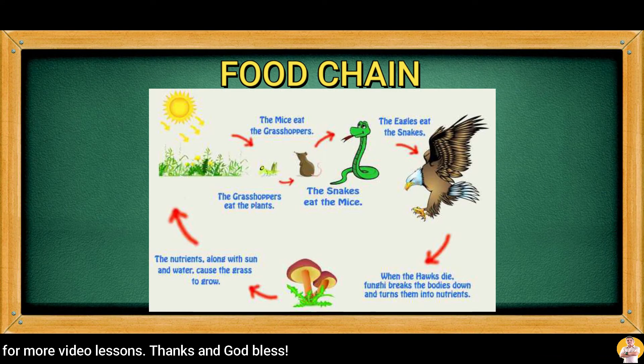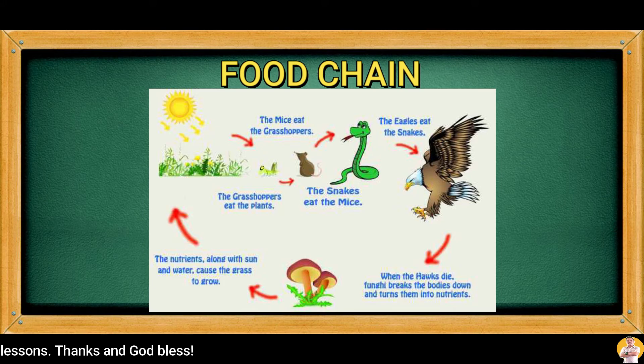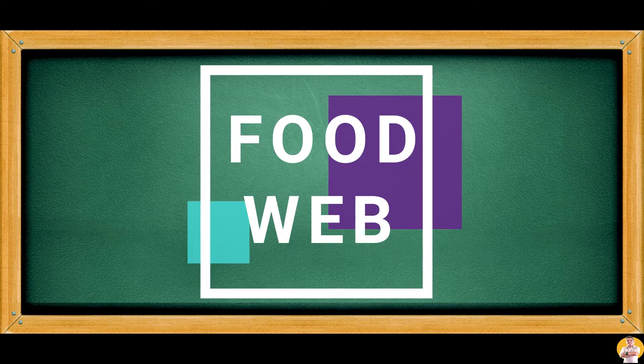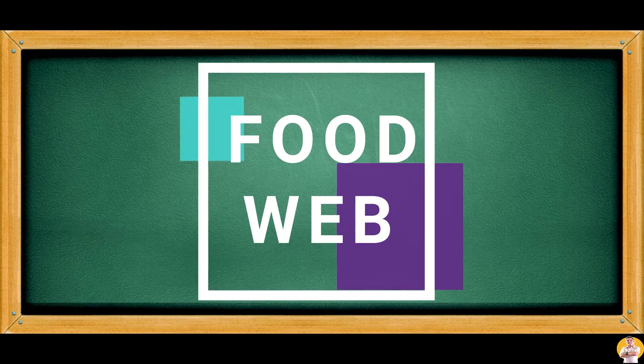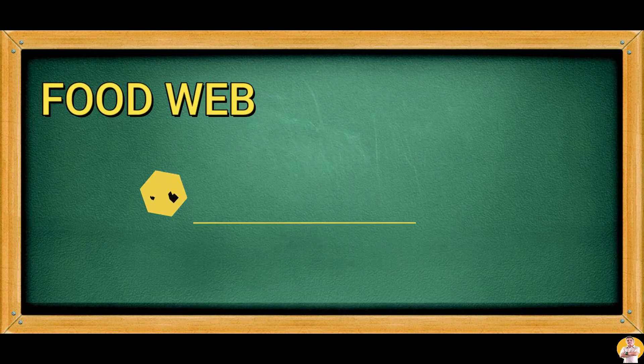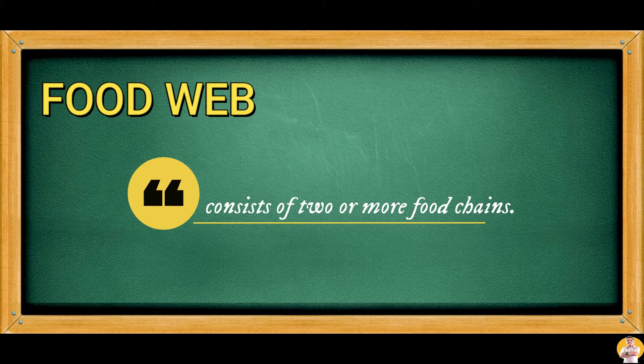A food web contains our food chains. When food chains are interlinked, they form a food web. A food web consists of two or more food chains. Here is an example of a food web.